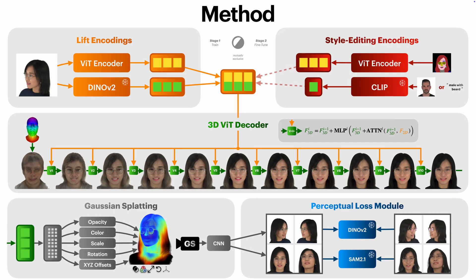Once trained, the base model can be adapted to downstream tasks, most notably disentangled 3D editing. This is achieved simply by replacing the encoding module. We use a segmentation map as input to the vision transformer for geometric control and a frozen CLIP encoder for style. Disentanglement emerges naturally since segmentation maps alone cannot infer style and a single CLIP embedding is insufficient to reconstruct geometry.